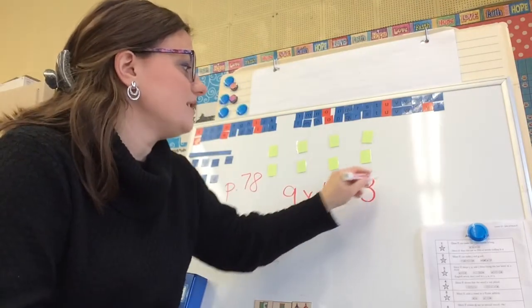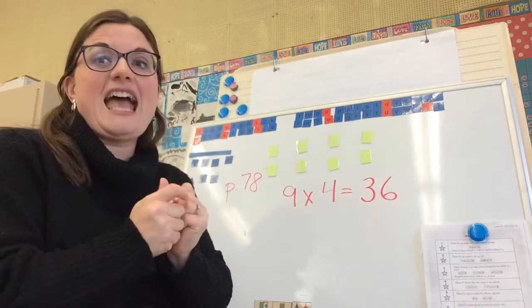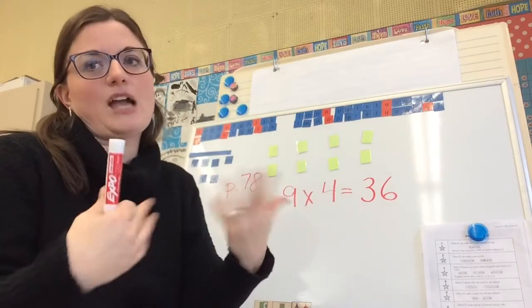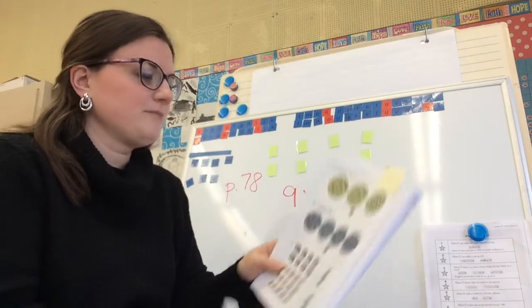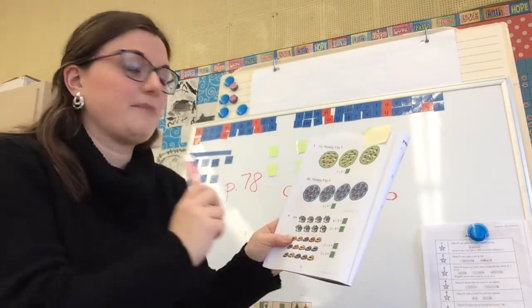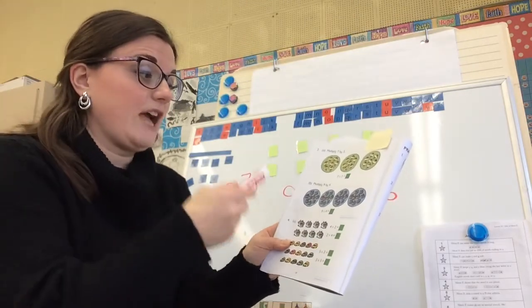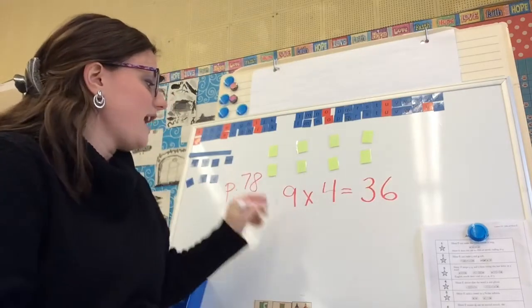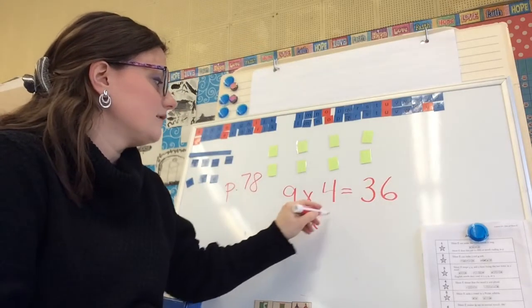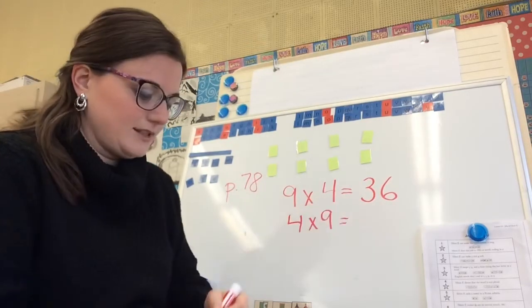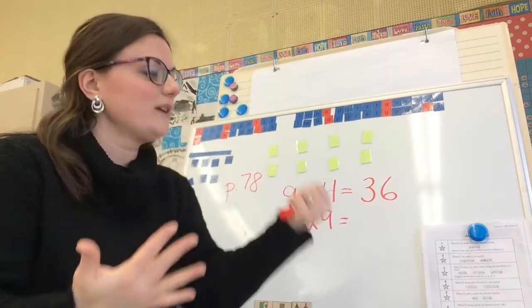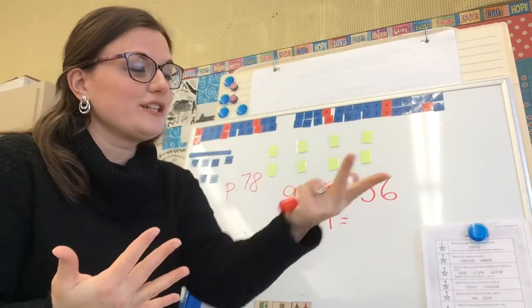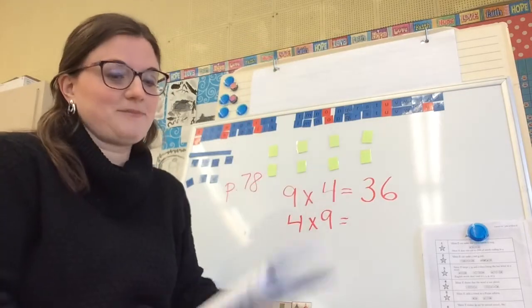Think of that when you do the nines is that we could add another 10 and then you just take back one. That's much easier to keep adding 10 to a number, right? Or we can count up by, we could count four nine times. We can do that. Right. So we could go four, eight, 12, 16, 20, 24, 28, 32, and 36.